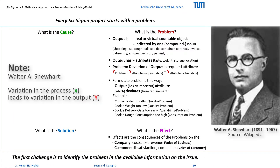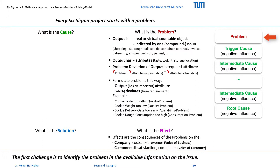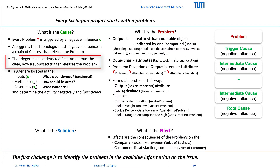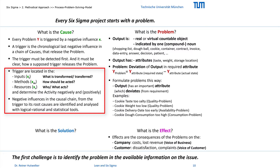What is the cause? Walter Shewhart discovered that variations in the process lead to variations in the output. Thus we must uncover the relationship between the problem and its root cause. The incident analysis offers a suitable procedure for this purpose. Each problem must be triggered by a last negative influence in a chronological causal chain. To find the root causes, we must analyze the entire causal chain from the trigger that releases the problem to an underlying root cause that we can control. It must always be clear whether and how a supposed trigger, like a rotten egg from the input, releases the problem — for example, cookie taste too salty. We will later come back to this topic and analyze the causal chain with logical, rational and statistical tools.